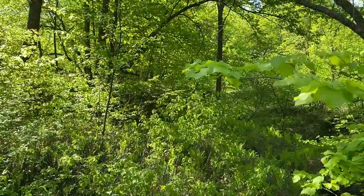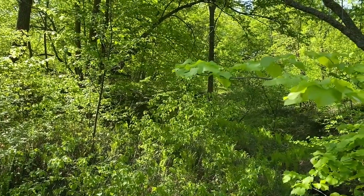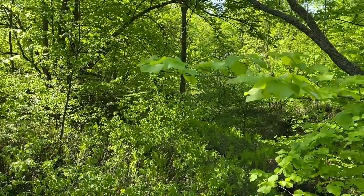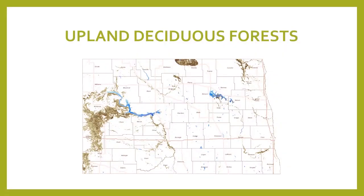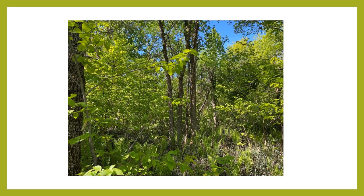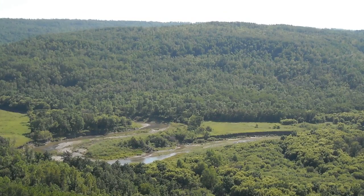Trees are divided into two groups: deciduous, or hardwood, and coniferous, or softwood. Most of North Dakota's woodlands are deciduous and are found along the rivers in the eastern half of the state. North Dakota forests are made up of three main layers of vegetation — the canopy, the understory, and the forest floor. Different species of wildlife live in each layer of the forest.